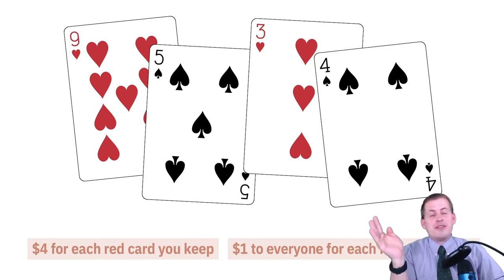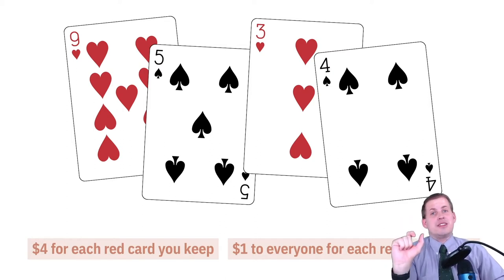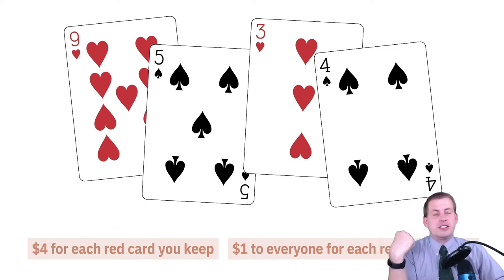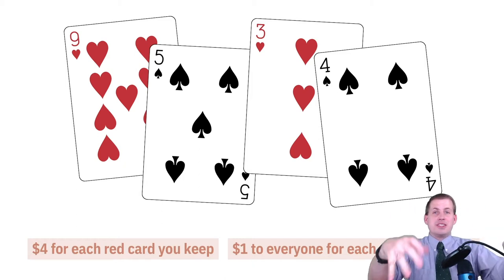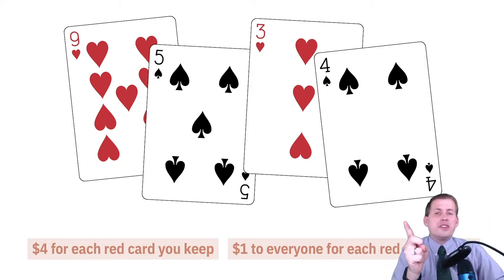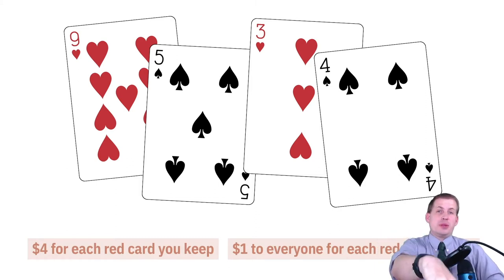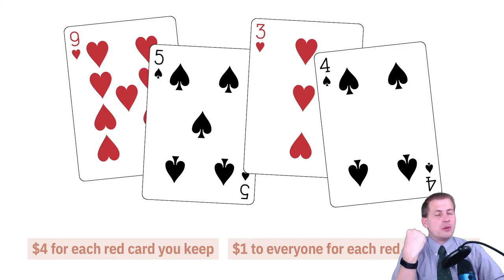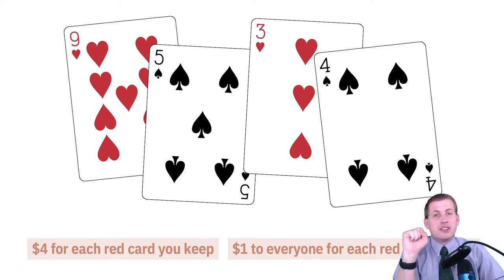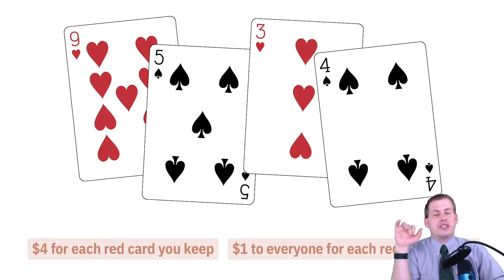If every single person in a class of 30 puts both their red cards in the pot, every single person gets sixty dollars — there's no way to get that individually, where the most you can earn by keeping both cards is eight dollars. But if one person convinces everyone else to donate while they hold back, that person gets eight dollars for keeping their two cards plus fifty-eight dollars from everyone else — a huge windfall. As others notice this, they start pulling out of the middle in subsequent rounds, and it devolves into nothing.